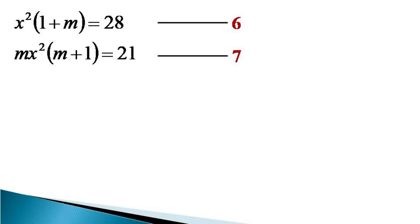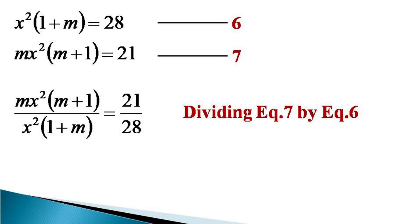To get the value of m from these two equations, we divide equation 7 by equation 6 and get mx²(m + 1) divided by x²(1 + m) = 21/28. On the left-hand side, x² occurs in both numerator and denominator so x² gets cancelled. Also, (m + 1) and (1 + m) are equal, so these terms also cancel. On the right-hand side, both 21 and 28 are divisible by 7, so they reduce to 3/4.